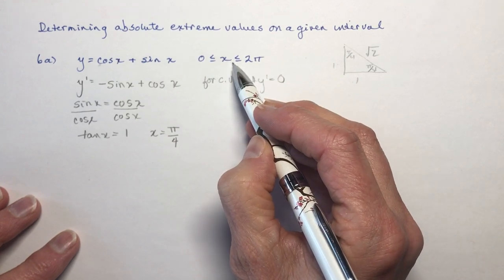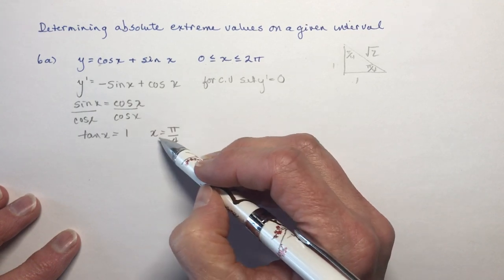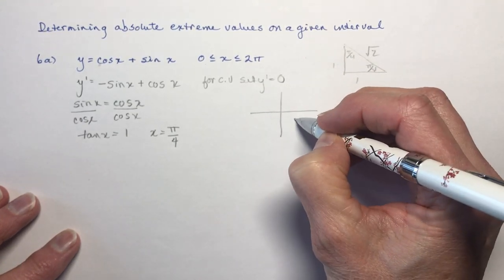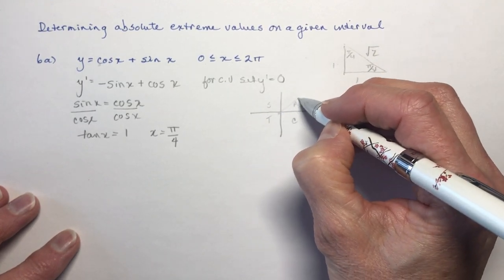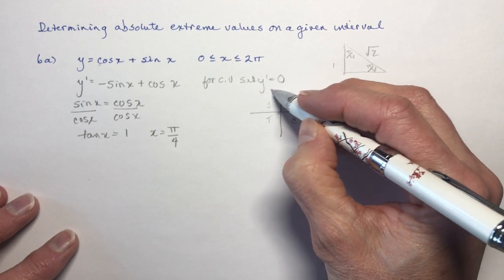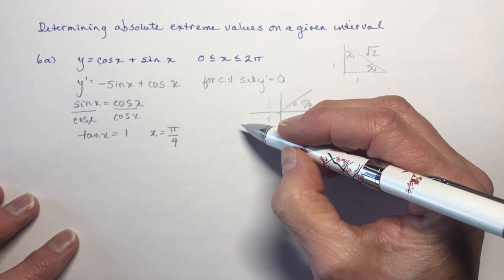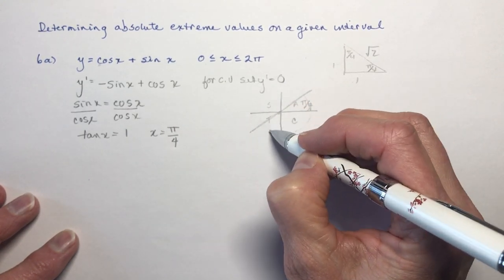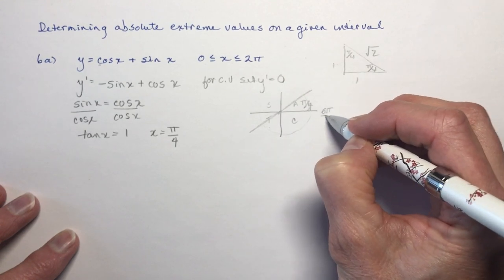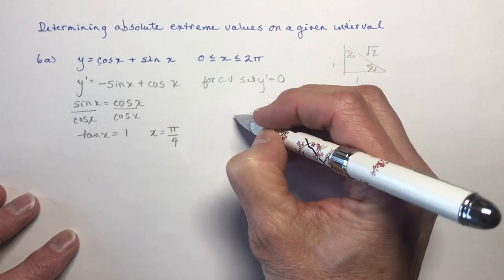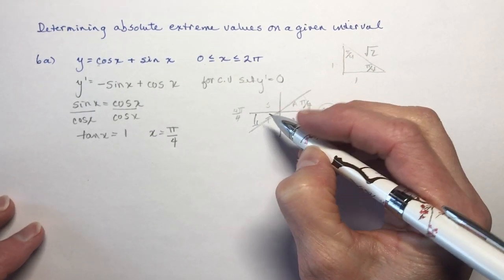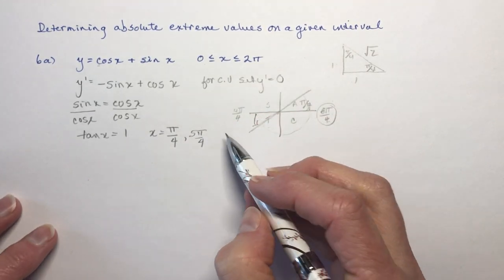Now I have to check the interval — between 0 and 2π, where else is tan x equal to 1? I'll draw a CAST diagram and put π over 4 on here. I want to know where tan is positive going all the way around to 2π. I always tell my students to change the pies to the same denominator, so 4π over 4 plus π over 4 gives 5π over 4. So I have two critical values: π over 4 and 5π over 4.